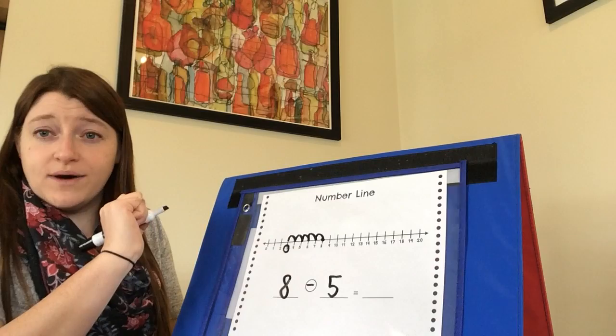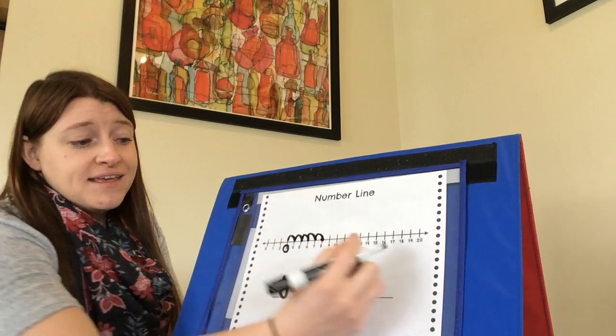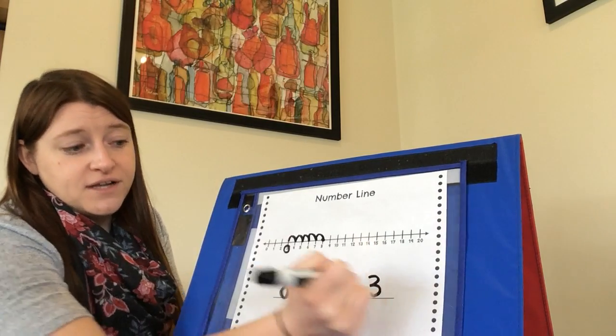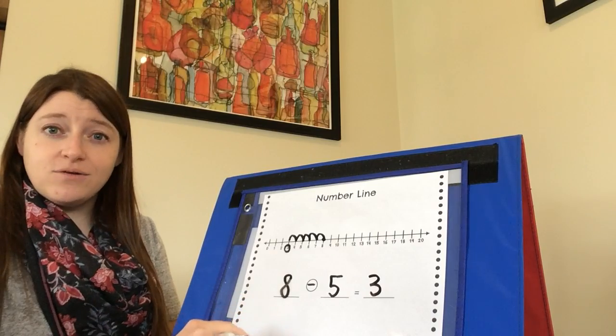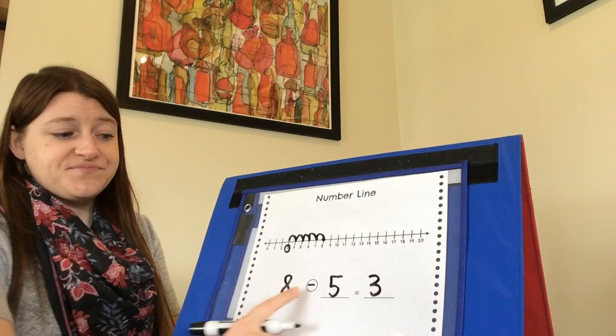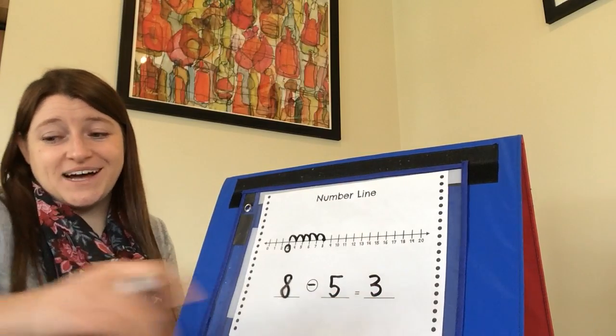You can circle it if you want to, if that's helpful for you. Eight minus five equals three. The difference or the answer to my subtraction problem is three. Go ahead and say that whole subtraction sentence. Great job.